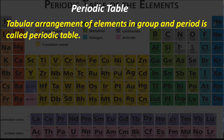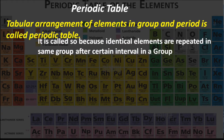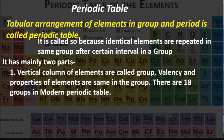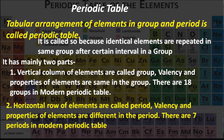A tabular arrangement of elements in groups and periods is called a periodic table. It is called so because identical elements are repeated in the same group after a certain interval. The periodic table has mainly two parts: vertical columns of elements are called groups — valency and properties of elements are the same in a group. There are 18 groups in the modern periodic table. Horizontal rows of elements are called periods — valency and properties of elements are different in a period. There are seven periods in the modern periodic table.